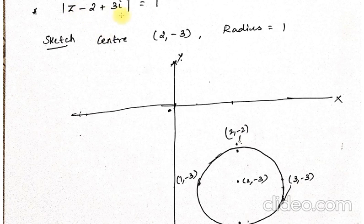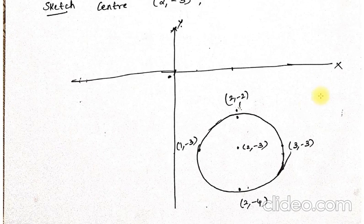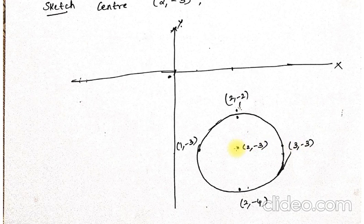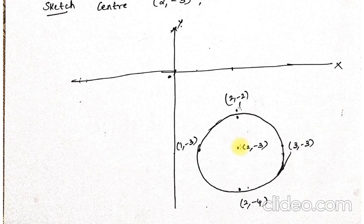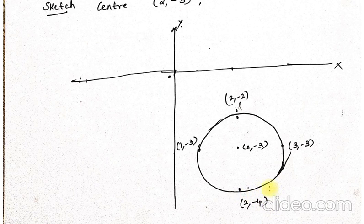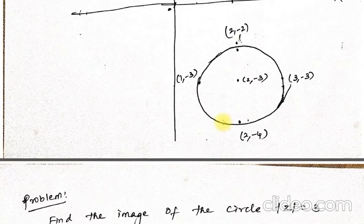For the next example, the centre is (2, minus 3) and the radius is 1. Plot the centre first. With radius 1: towards the right x increases by 1, giving x = 3; towards the left x decreases by 1, giving x = 1. In the upward direction y increases by 1: minus 3 plus 1 = minus 2. Downward, y decreases by 1: minus 3 minus 1 = minus 4. Collect all four points and sketch the circle.